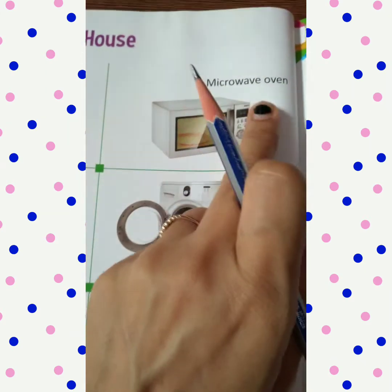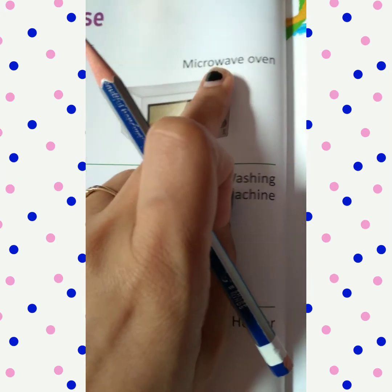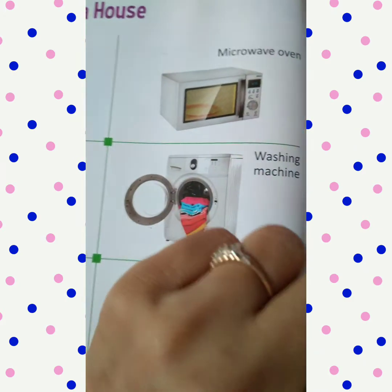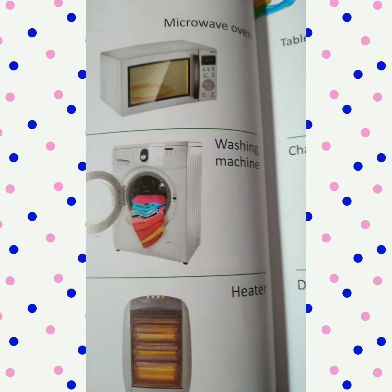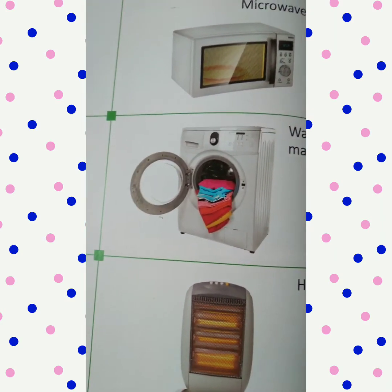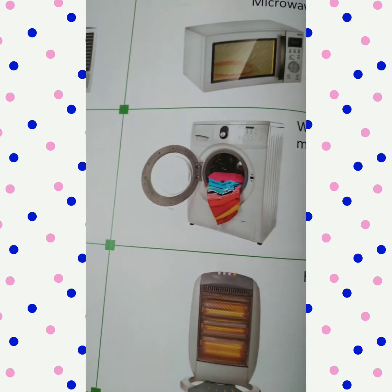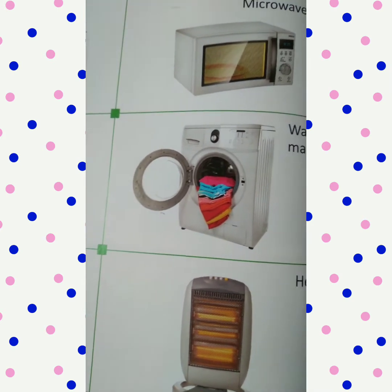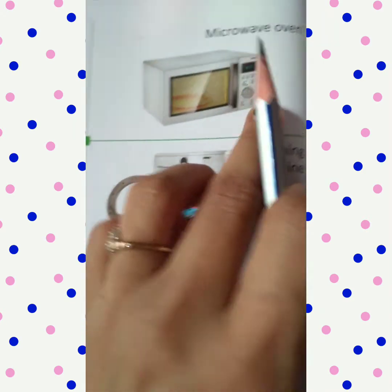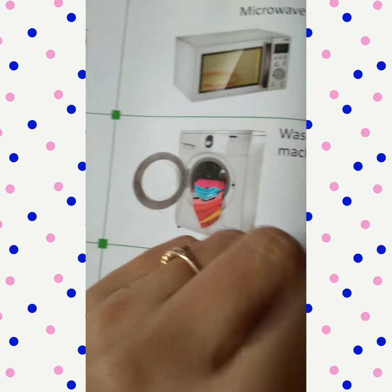Next is the microwave oven: M-I-C-R-O-W-A-V-E O-V-E-N. Mostly on Sundays or Saturdays, what do you say to Mama? 'Mama, I am feeling hungry, I want to eat pizza.' And Mama says, 'No outside food allowed.' So you say, 'Mama, please make this in your microwave.' Yes, microwave me banta hai — tell Mama and she will make it for you.